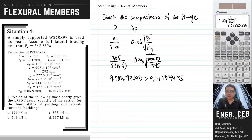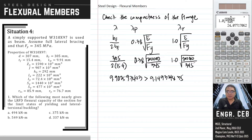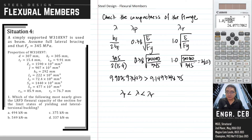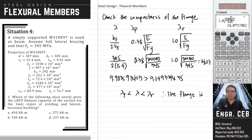Let us check the other comparison, which is lambda sub r. This equals 1.0 times the square root of E over Fy, which gives 24.07. The value of lambda is greater than lambda sub p but less than lambda sub r. If lambda falls into this category, it means the element is non-compact. Therefore, we conclude that the flange is non-compact.